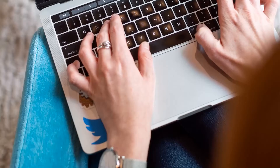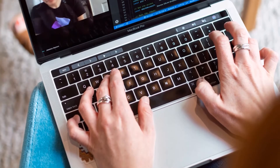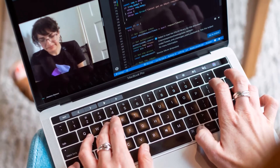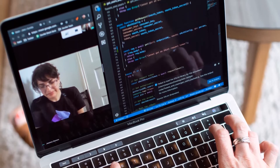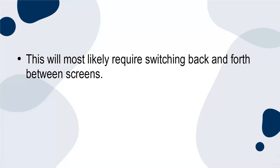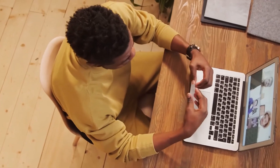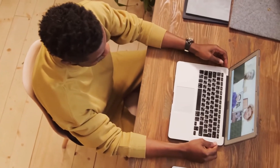Multitasking. In a virtual event, there are a lot of things going on at one time. The presenter is likely to be presenting the information, fielding questions that are coming via chat, engaging with attendees, and more. This will most likely require switching back and forth between screens. Unfortunately, multitasking is not an ability that most people have, but it's a skill that can be improved. However, presenters must understand their limits and plan the event accordingly.